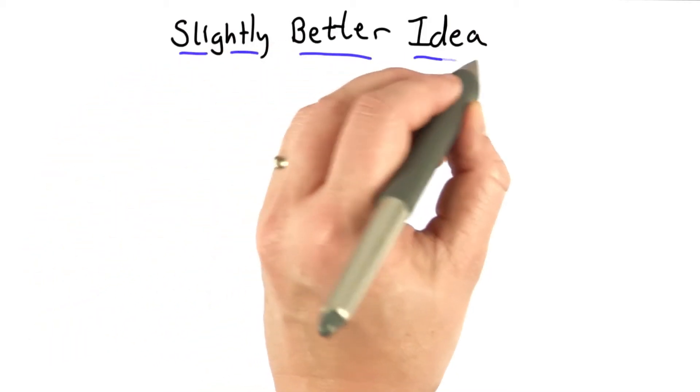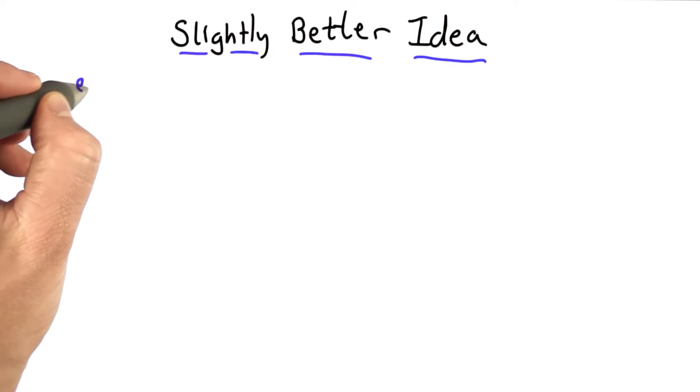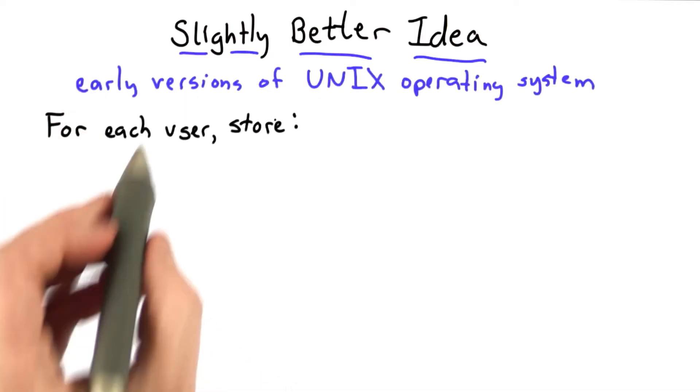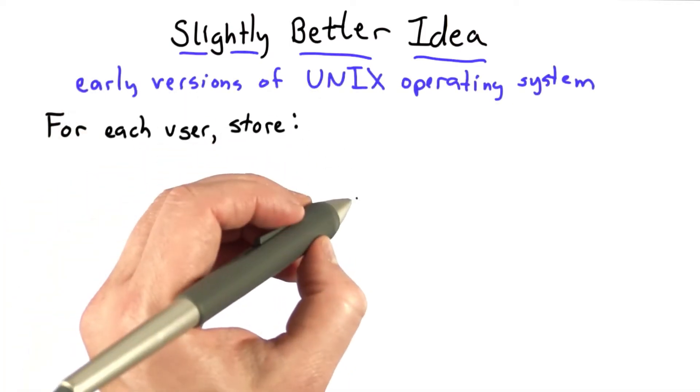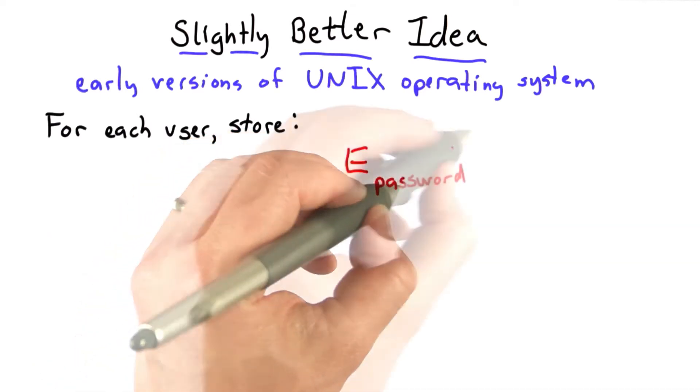So now we'll look at a slightly better idea. And this was actually what was done by early versions of Unix. So the idea was to store for each user the result of encrypting using the user's password as the key, the value 0.